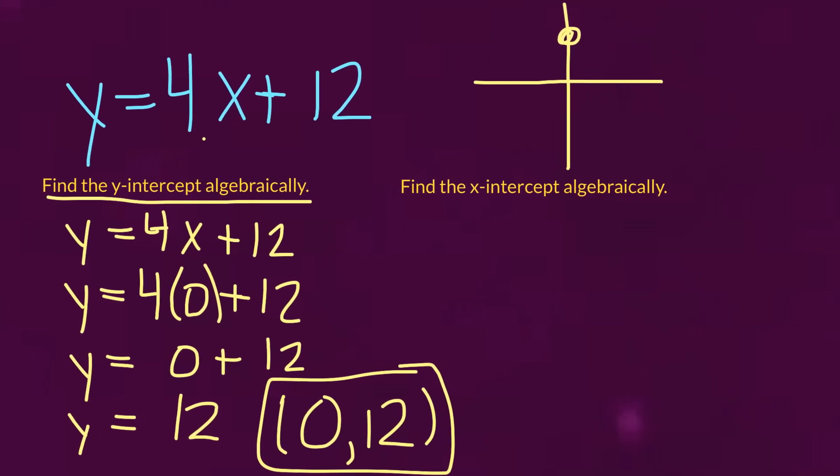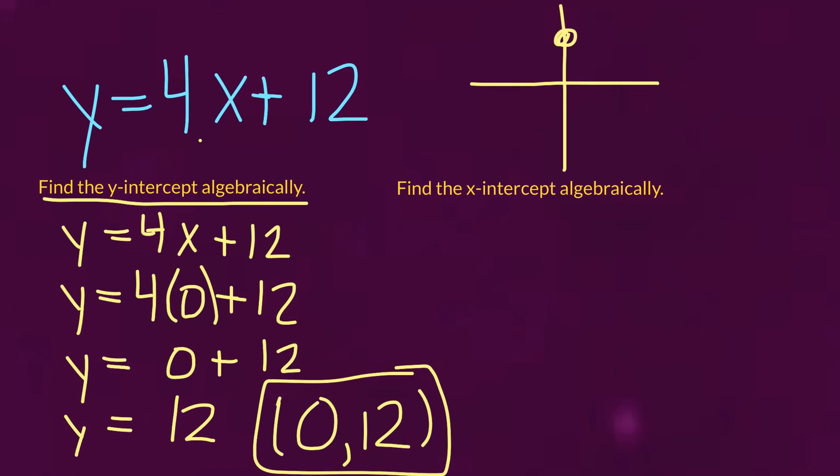Now, next part, we're going to find the x-intercept. So this time, x-intercept means that our y value is equal to 0. For example, if we drew an x-intercept here, that has a y value of 0. So back to the equation. We're going to rewrite it again. But instead of replacing an x with 0, we're going to replace y with 0. And this is what would happen. We would get 0 equals 4x plus 12.